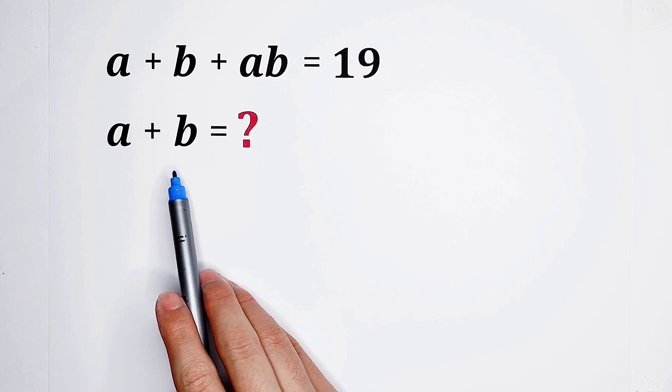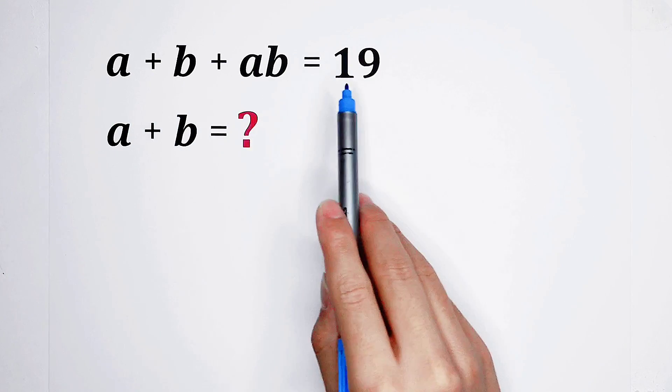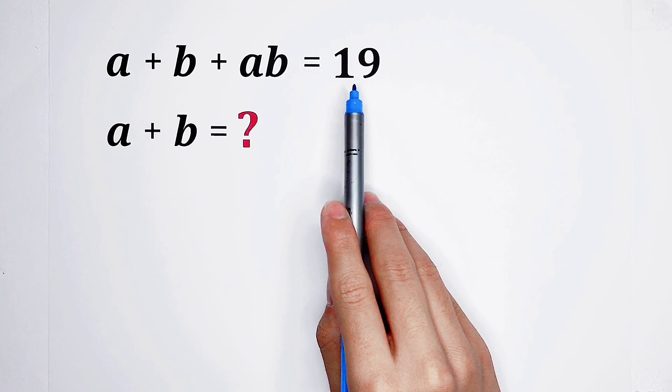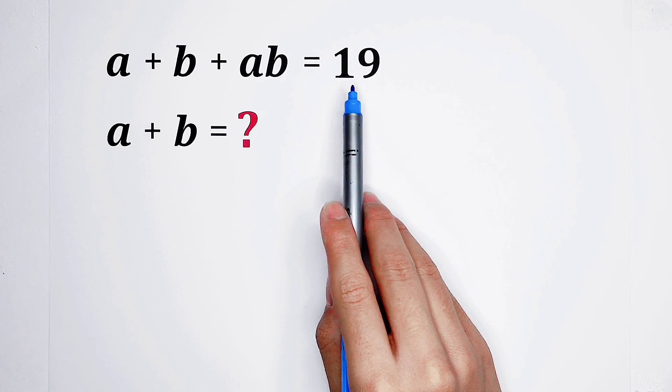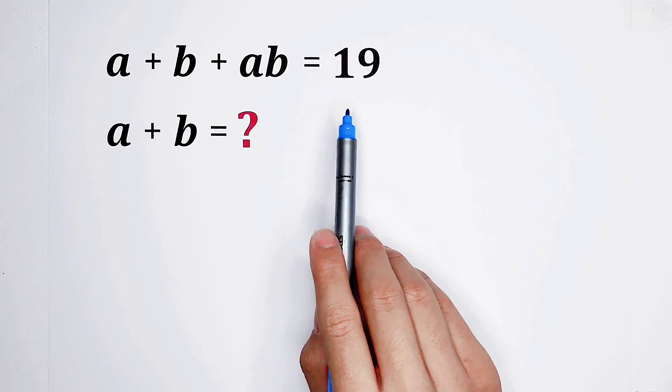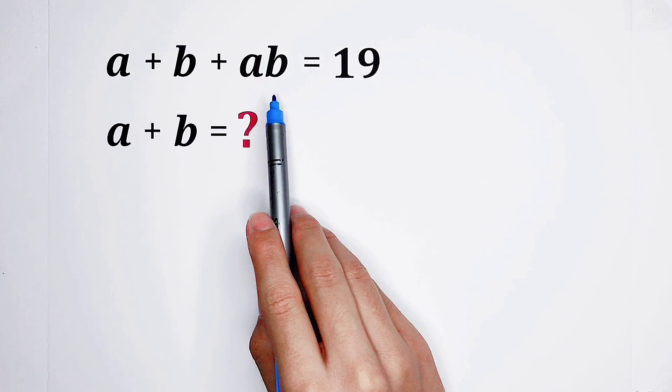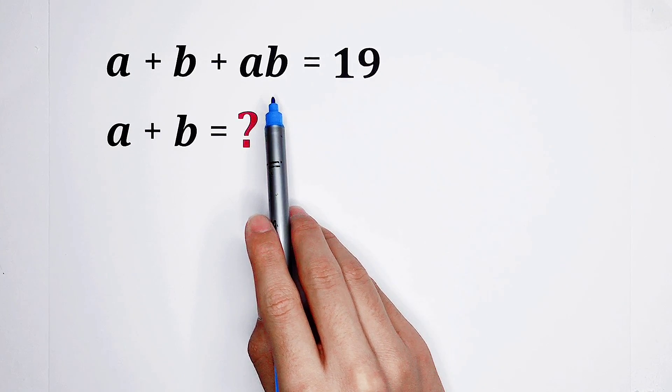Firstly, inspection or observation. A plus B plus AB equals 19 is given. This equation looks so nice. Our first idea is to factorize the left side. However, we don't know if it works. So let's have a try.